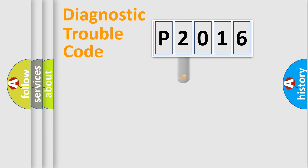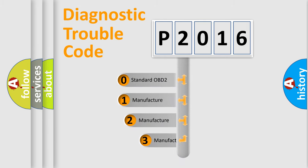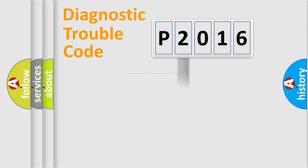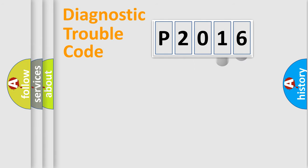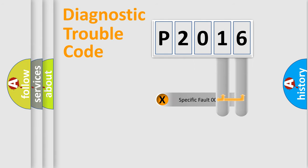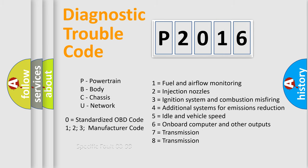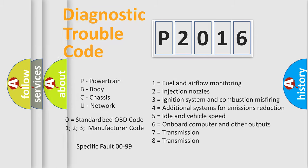This distribution is defined in the first character of the code. If the second character is expressed as zero, it is a standardized error. In the case of numbers one, two, or three, it is a more specific manufacturer-defined error. The third character specifies a subset of errors. This distribution is valid only for the standardized DTC code, and only the last two characters define the specific fault of the group. This division is valid only when the second character is expressed by the number zero.